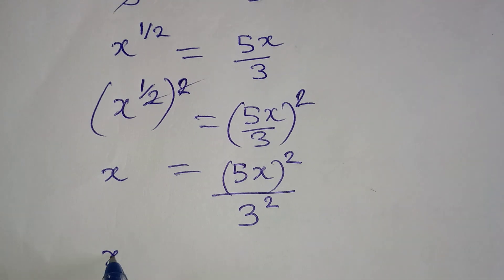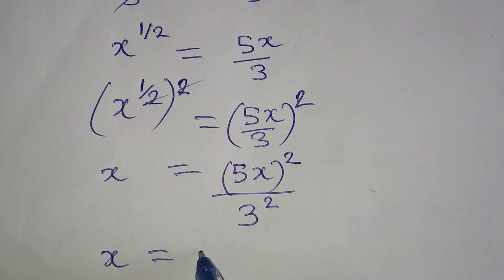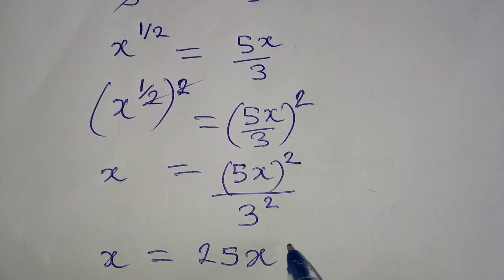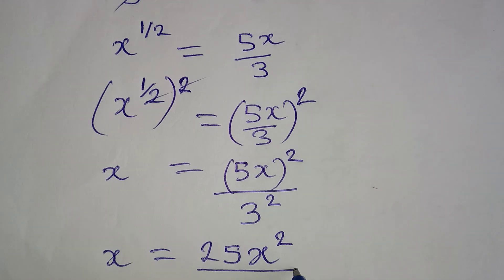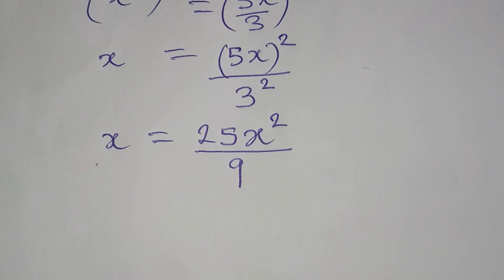So now x will be equal to 5 squared first. That will give us 25 and then x squared will come down. Then this is over 3 squared, which is 9.